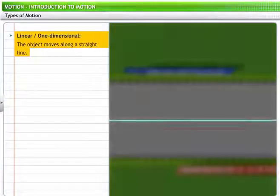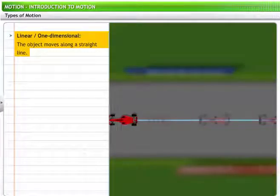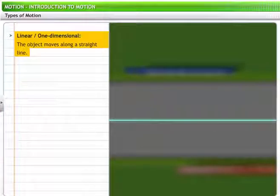For example, cars moving along a straight path in the circuit exhibit linear motion.